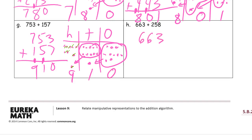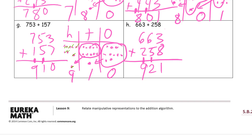Six hundred sixty-three plus two hundred fifty-eight. Start with the ones digits first: three plus eight is eleven — that's a ten and a one. Now our tens digits: six plus five is eleven, plus one more is twelve — that's twelve tens, a hundred with two tens left. And now we add our hundreds: six plus two is eight, and one more is nine. Nine hundred twenty-one.